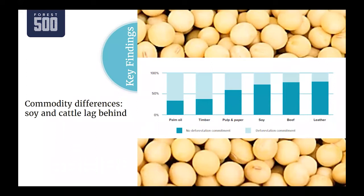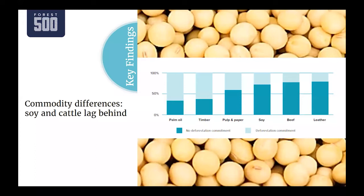Company action also varies by commodity. Commodities more in the public eye tend to receive more attention, as seen with palm oil. By contrast, soy, beef, and leather face particularly high levels of inaction: 81% of companies failed to make deforestation commitments for leather, 79% for beef, and 73% for soy. Despite many companies recently condemning the drivers of the 2019 Amazon fires, they've simultaneously failed to make their own commitments for the three commodities at the core of those fires.